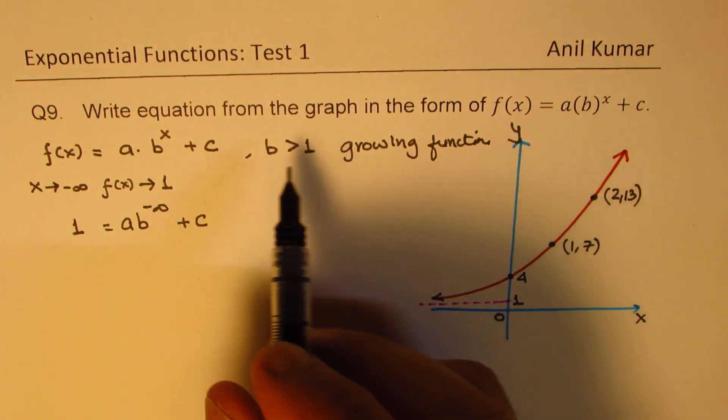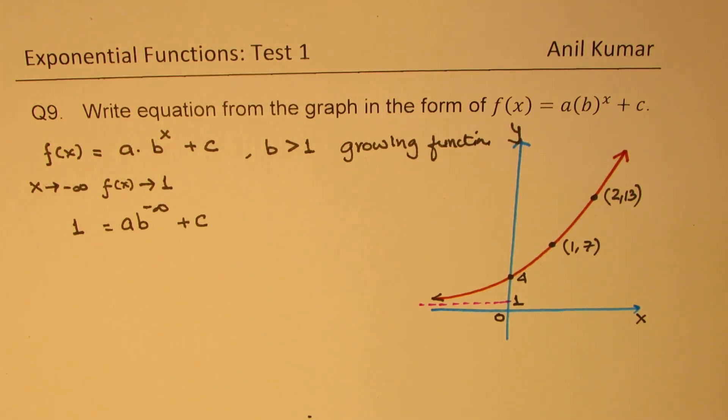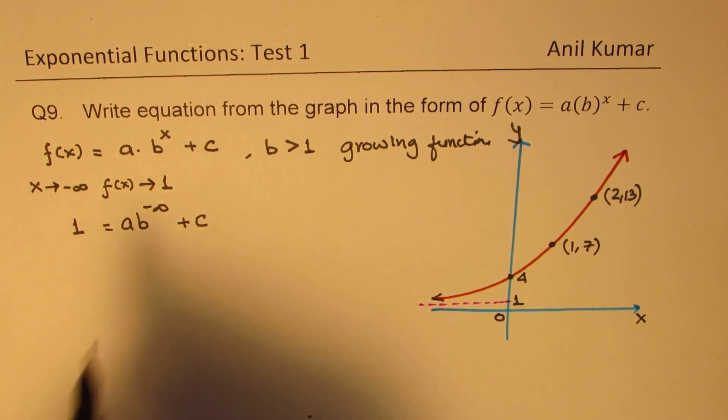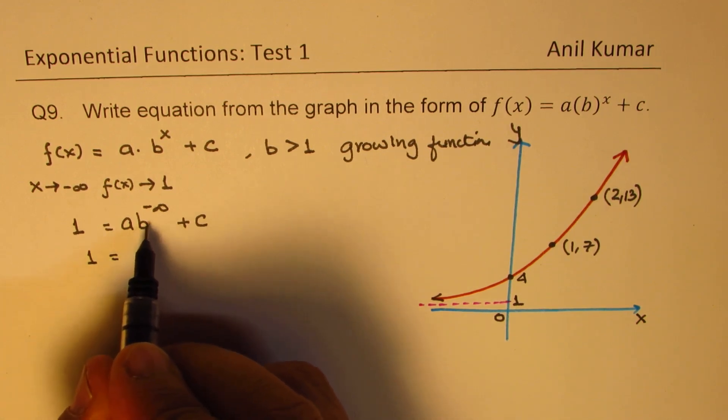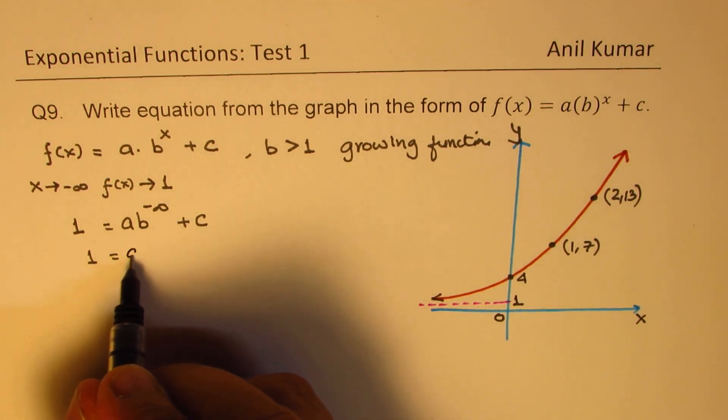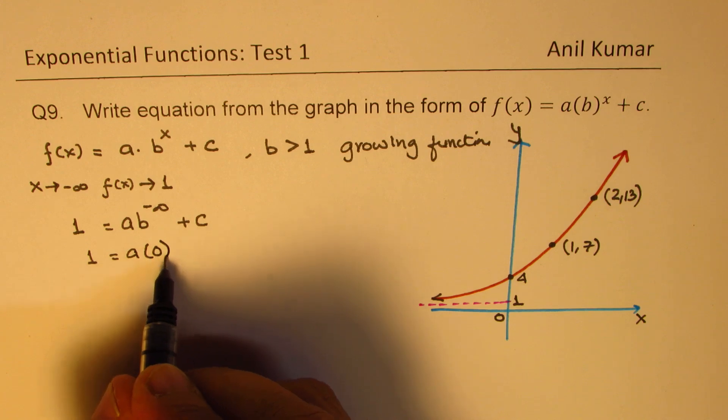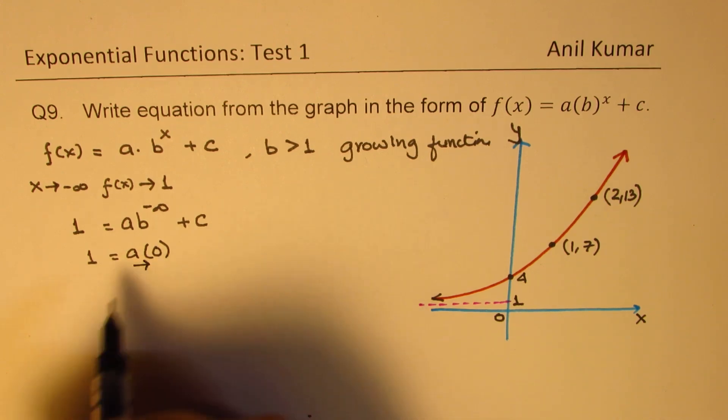So if for the decay, it could be between 0 and 1, okay? Since b is positive, we can clearly see that the first part, b to the power of negative infinity, will be approaching 0. So this is where it is approaching, correct?